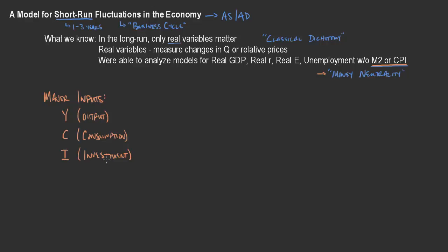Firms are making investments in purchasing factories and coming up with intellectual property that can then be sold, increasing a return on their investment. We also think about the government's role — government expenditures, net government expenditures on the economy. And then we've got net exports as well, which we think about as exports minus imports.